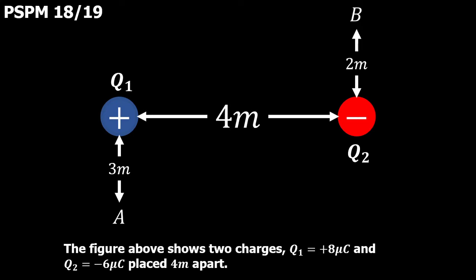As you can see in the figure above, it shows two charges, Q1 and Q2. Q1 has positive 8 microcoulombs and Q2 has negative 6 microcoulombs, and they're both spaced 4 meters apart. And then we have two positions here, A and B, and those are going to be involved in the questions soon.